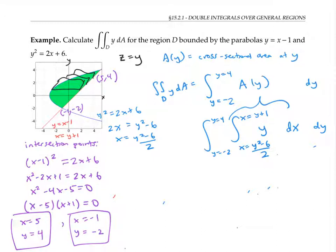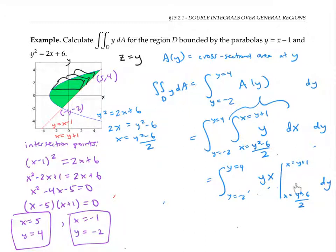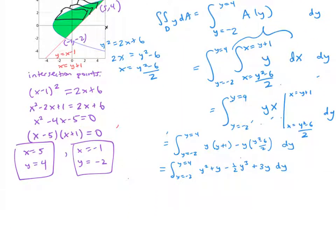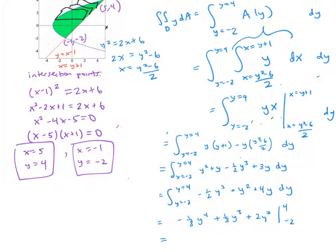Now I'm ready to evaluate my inner integral. Remember that we're integrating with respect to x, so the integral of y is yx, evaluated at the bounds of integration. Then we still have to integrate that answer with respect to y. Plugging in the bounds and simplifying, I can integrate again and evaluate at my bounds of integration to get a final answer of 18.